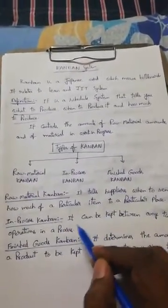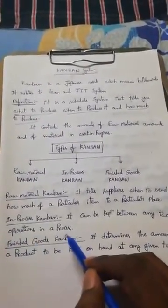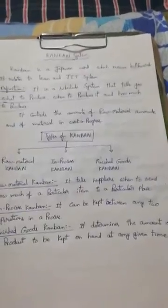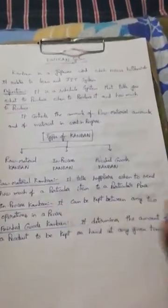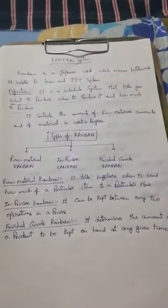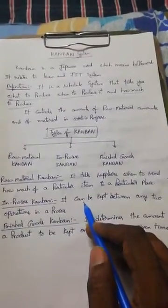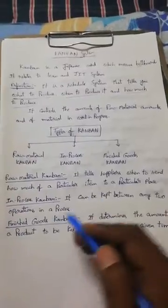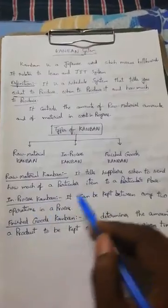The second type is In-Progress Kanban, also called WIP — Work In Progress. It can be kept between any two operations in a process. In industry, products are not manufactured in a single category; rather, different varieties are manufactured at the same time in the same place. WIP Kanban focuses on requirements between any two categories of the manufacturing process.